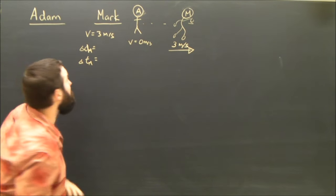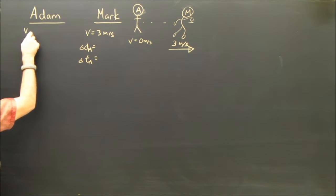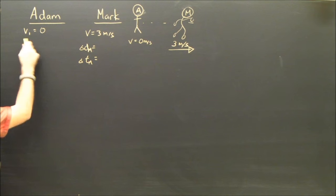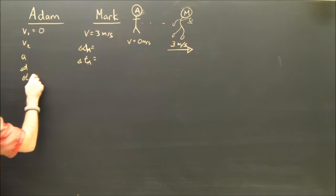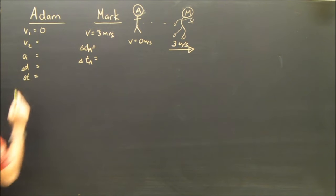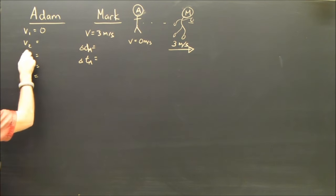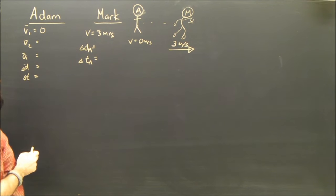Adam starts from rest. Well, that means, of course, that v1 is equal to 0, and as soon as I write v1, I'm going to have to write v2. I'm going to write a. I'm going to write delta d. I'm going to write delta t. All five of the variables that belong to my kinematics equations, the big five.